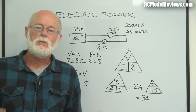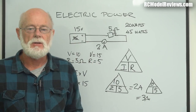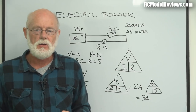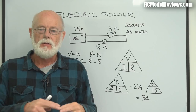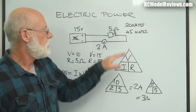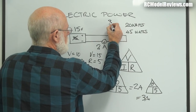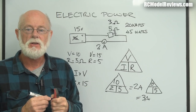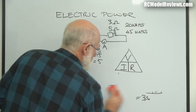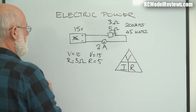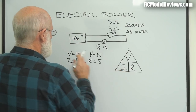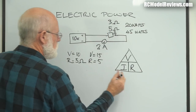Now, there's another way to make the current go up: put a load on the motor. When you put a load on an electric motor, its effective resistance drops - say from 5 ohms to 3 ohms. Let's go back to 10 volts and use 3 ohms resistance. The triangle gives us: V is 10 divided by R is 3.